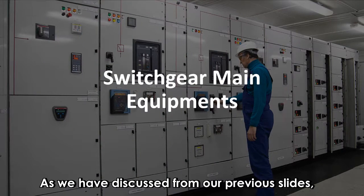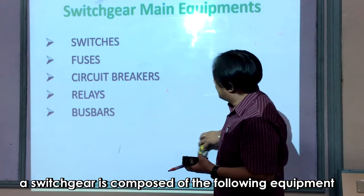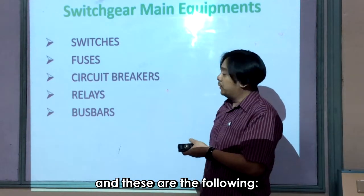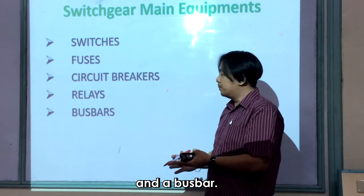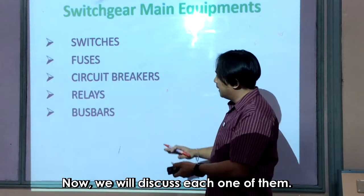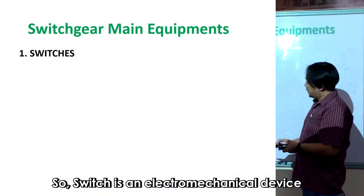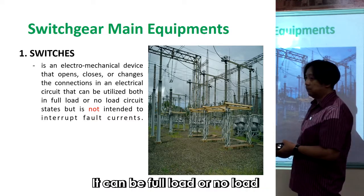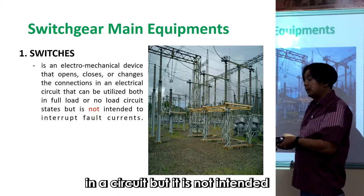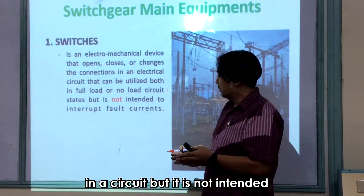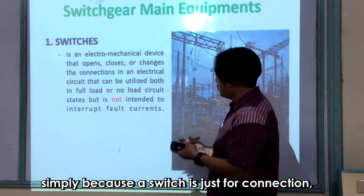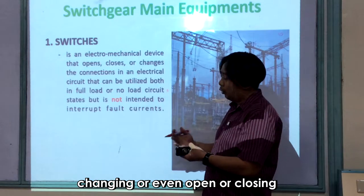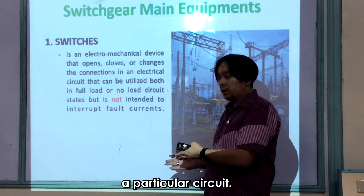A switchgear is composed of the following equipment: switch, fuse, circuit breaker, relay, and bus bar. A switch is an electromechanical device for opening or changing the connection of a certain equipment. It can be used under full load or no load in the circuit, but it is not intended for interrupting any kind of fault — a switch is just for connecting, changing, or opening and closing a particular circuit.